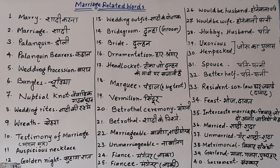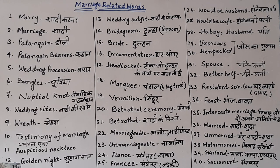The sixth word is 'bangles' — the singular form is 'bangle,' meaning 'churi,' and a set of bangles means 'churiyan.' The seventh word is 'nuptial knot' — note that the 'k' is silent. 'Nuptial' means 'gant' or 'bandhna,' so 'nuptial knot' means the marital bond.